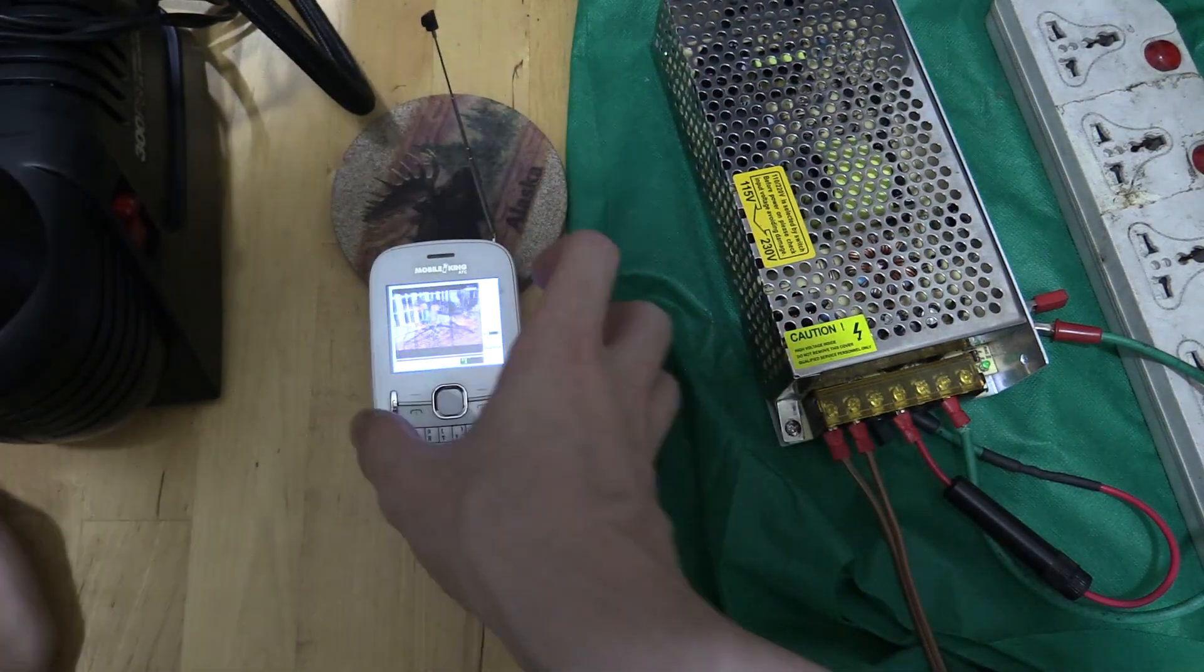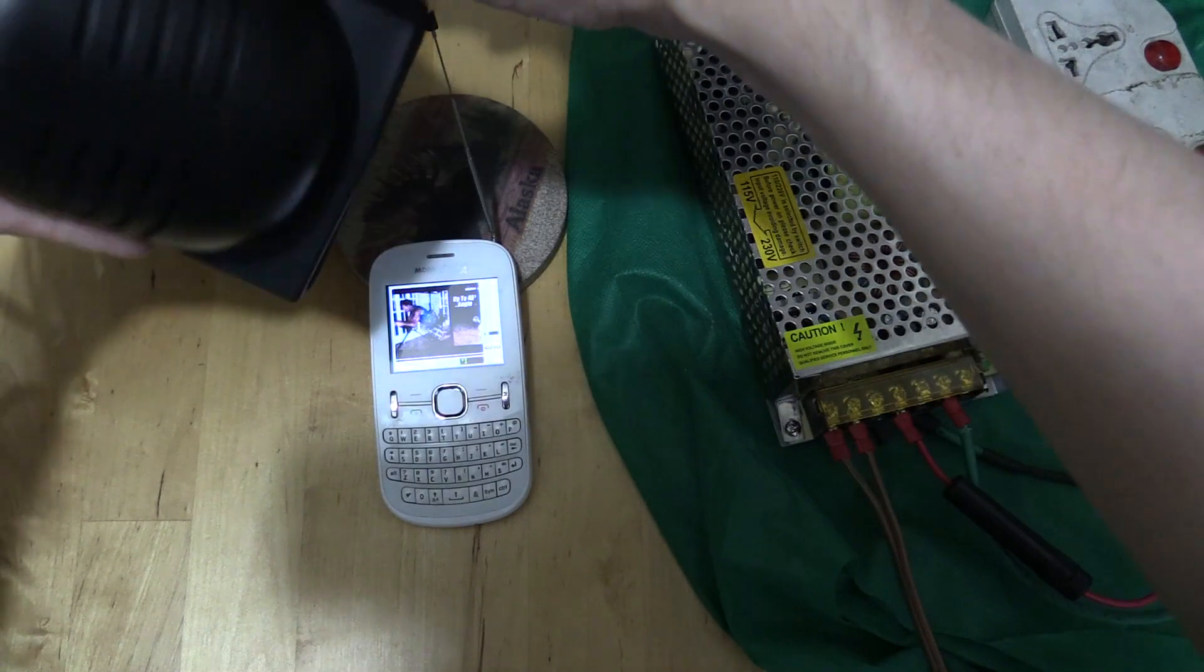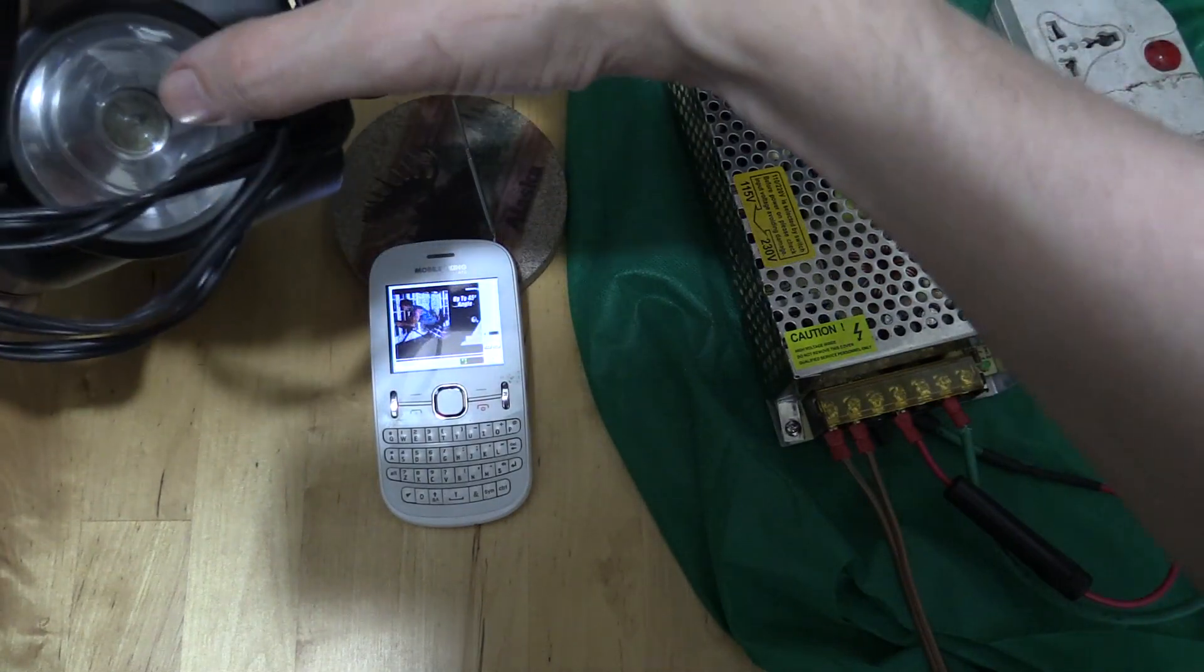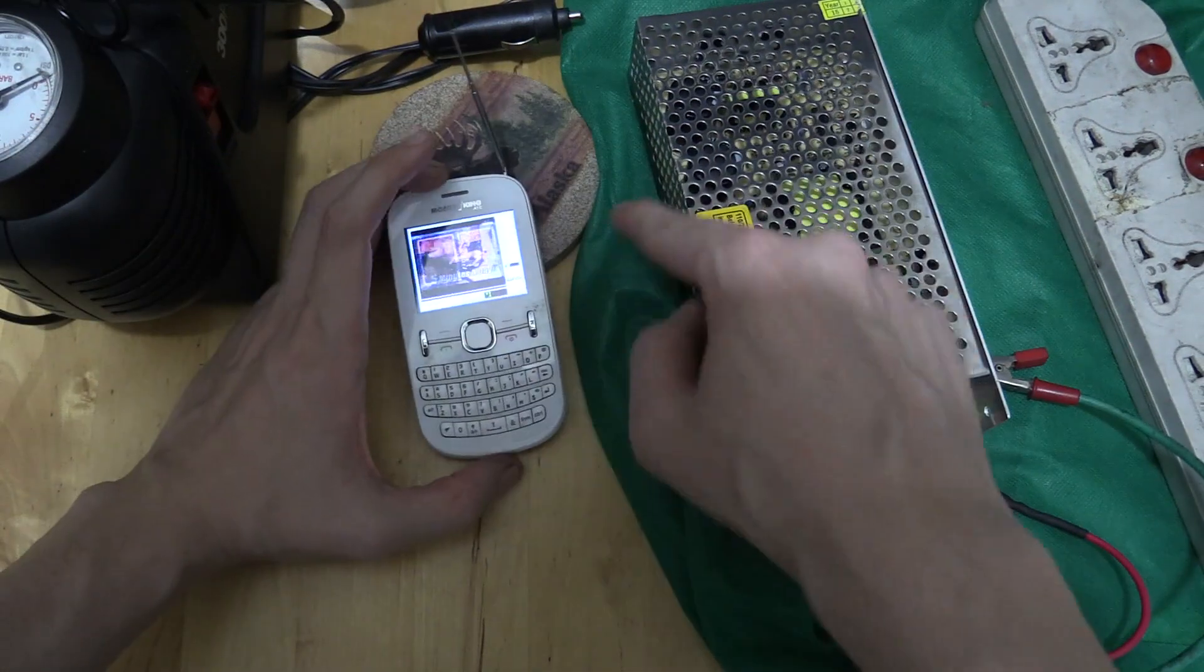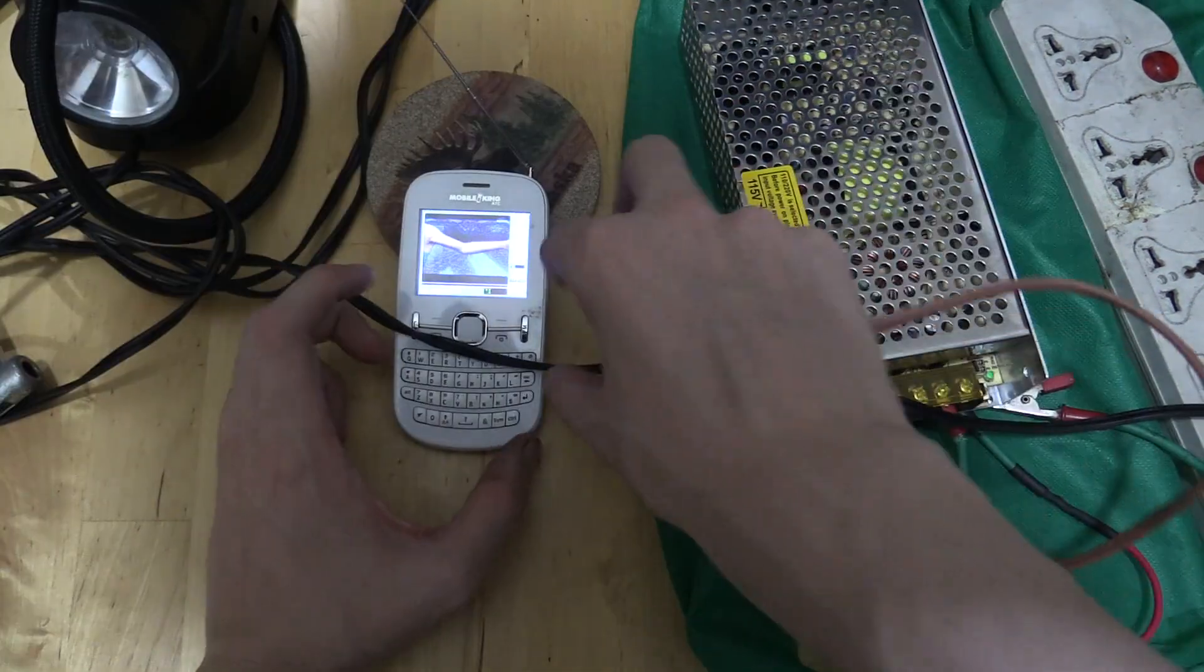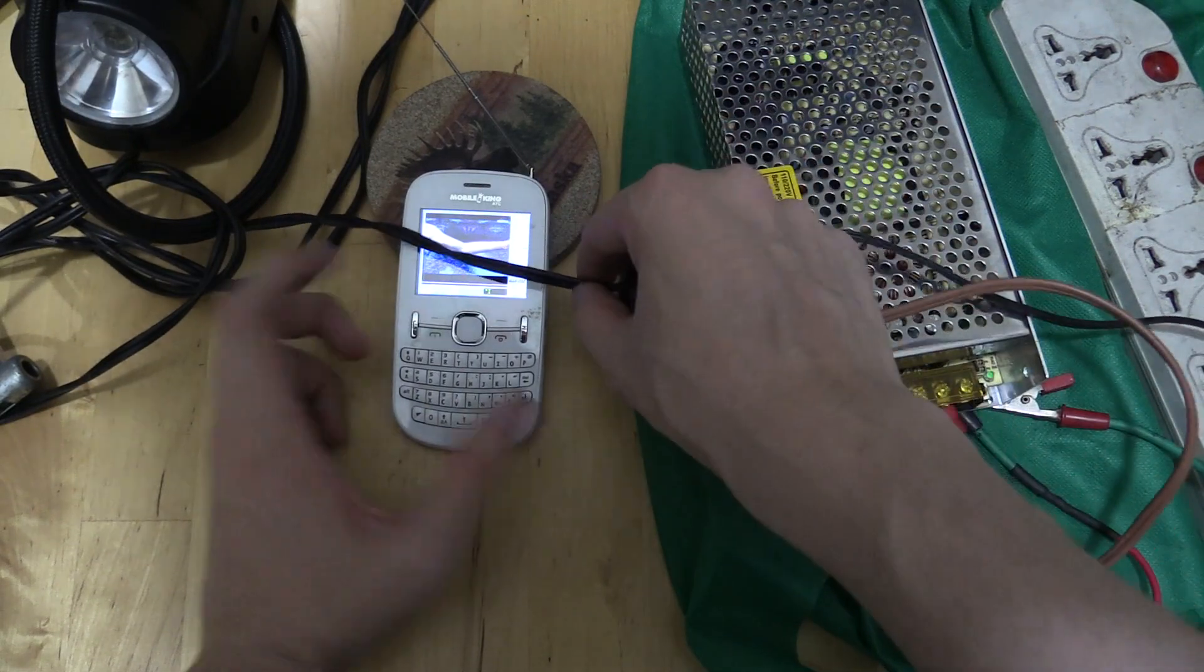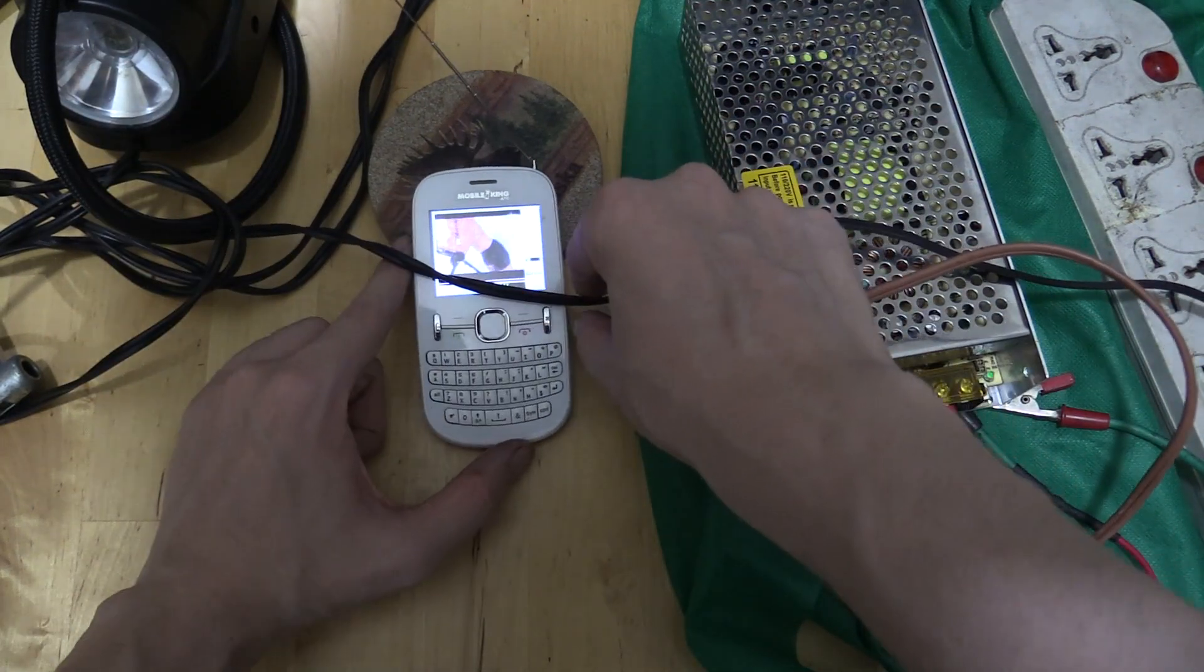So I figured we'll basically power a load. We're going to power this incandescent bulb here, 12 volt bulb, from this power supply, put it right next to this and see whether it creates any interference. And I'm also going to have the cable going to the light going across the phone.